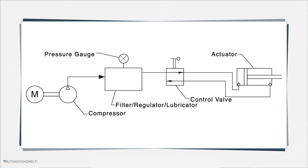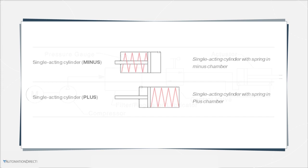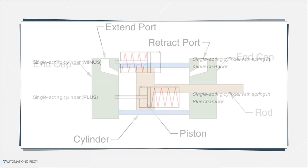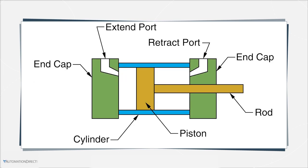This actuator style can be subdivided into two types based on their operating principle: single acting and double acting. Single acting cylinders use one air port to allow compressed air to enter the cylinder to move the piston to the desired position, as well as an internal spring to return it to the home position when the air pressure is removed. Double acting cylinders have an air port at each end and move the piston forward and back by alternating the port that receives the high pressure air.